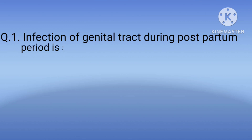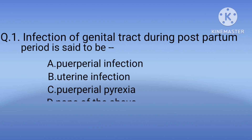Question 1: Infection of the genital tract during the postpartum period is said to be — option A: puerperal infection, option B: uterine infection, option C: puerperal pyrexia, option D: none of the above. The correct option is A, puerperal infection, which is the infection of the genital tract occurring during labor or within 42 days of the postpartum period.